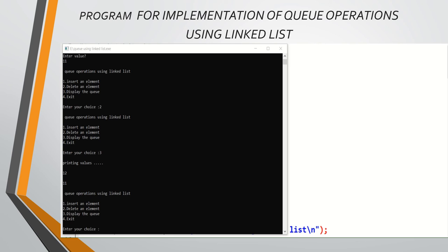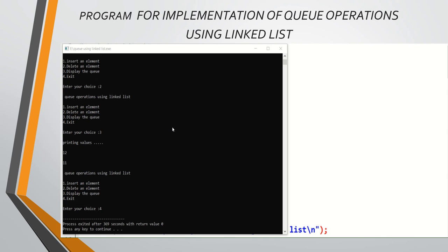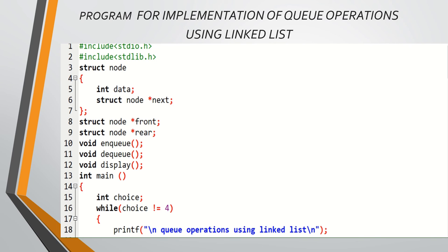Using the enqueue operation, three elements — 34, 12, and 11 — were inserted. Using the dequeue operation, 34 was deleted first as it follows the first-in first-out mechanism. Using the display operation, the remaining elements are shown. The address fields are not displayed because addresses are stored internally. To exit, enter option 4. This is the complete coding process for implementation of queue operations using linked list.